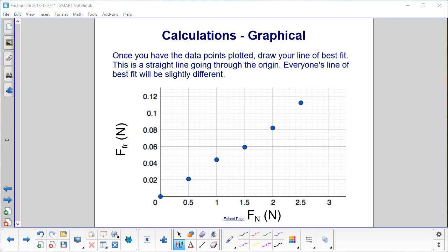Here's what we get. And then draw your line of best fit. That's the next thing you want to practice. So you can pause the video again if you need to. And in this case, it'll be a straight line going through the origin because this is our first data point. We're not pulling it with any force, so there's no friction. Everyone's line of best fit will be slightly different. Make sure you use a straight edge like a ruler and have as many dots above as you do have below your line of best fit.